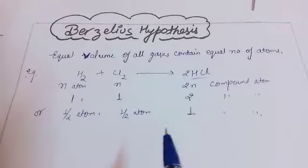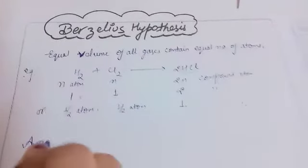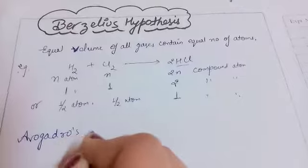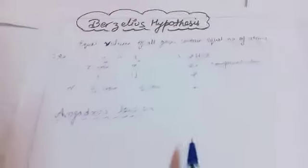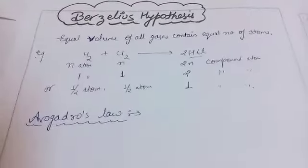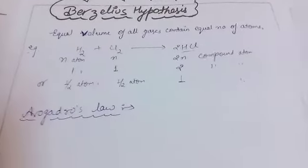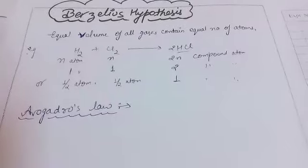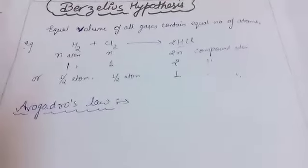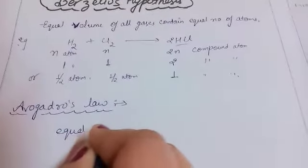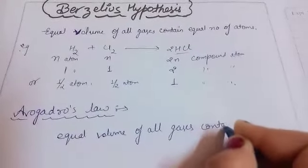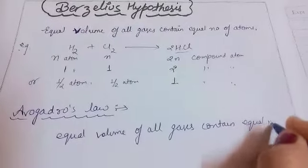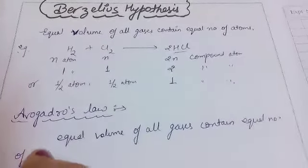To sort out this problem of the half atom, Avogadro gave a law known as Avogadro's law. According to Avogadro's law, under similar conditions of temperature and pressure, equal volume of all gases contain equal number of molecules — not atoms, but molecules.